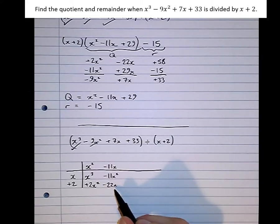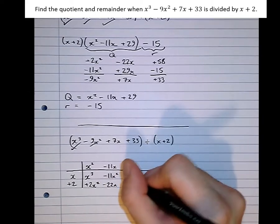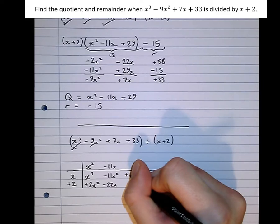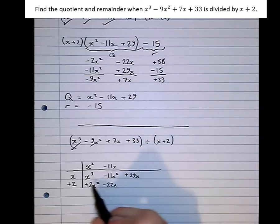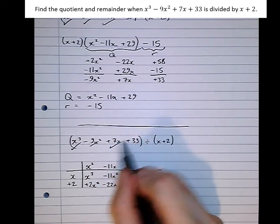But we've got now minus 22x. Actually, we need plus 7x. So if I put plus 29x there, that makes the adjustment that we need to get the plus 7x. Brilliant.